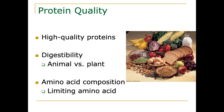When choosing protein foods we want to think about the quality of the protein. High quality proteins are generally foods that are highly digestible, and animal sources of protein tend to be more digestible than plant sources. However, plant sources can be prepared in such a way that they are highly bioavailable, especially for vegetarians. The other thing that determines protein quality is the amino acid composition — specifically how much of what we call limiting amino acids are present in that protein food.